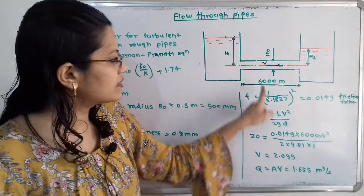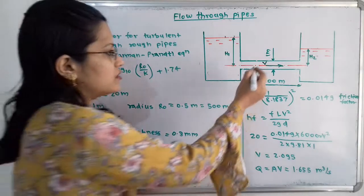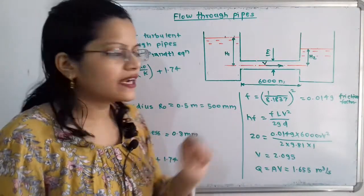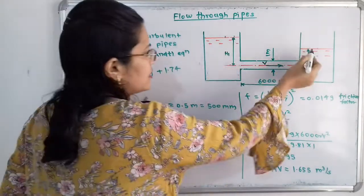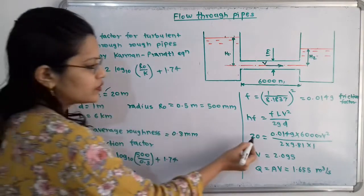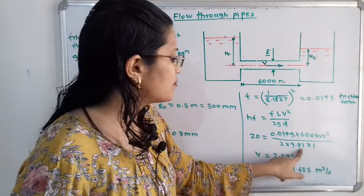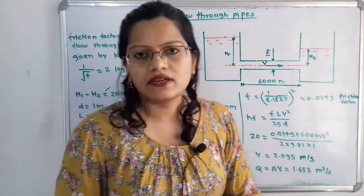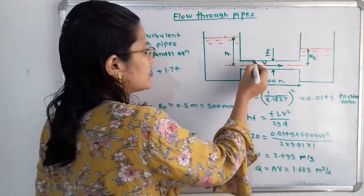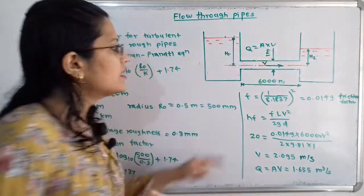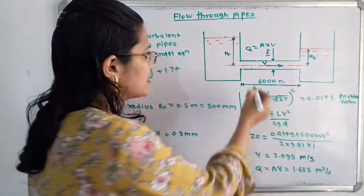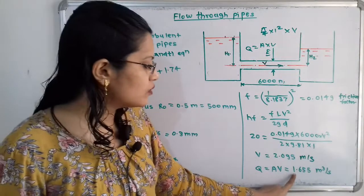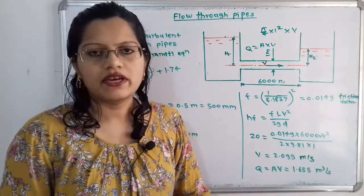Substituting F = 0.0149, L = 6000, D = 1, g = 9.81, and HF = 20 meters, we solve for velocity V. V is equal to 2.095 meters per second. The discharge Q equals area multiplied by velocity: Q = (π/4) × D² × V = (π/4) × 1² × 2.095. Therefore Q equals 1.655 cubic meters per second. This is the final answer.